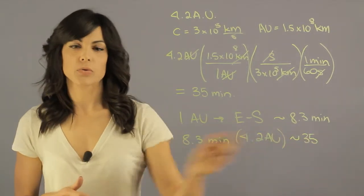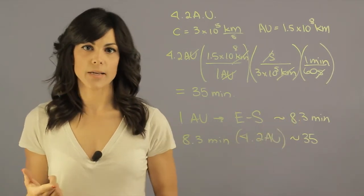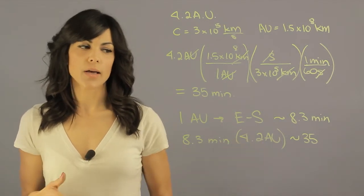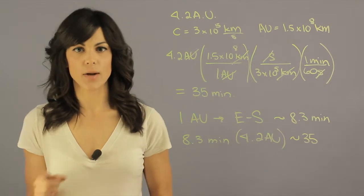So this is a handy little shortcut that you just have to remember. One astronomical unit means 8.3 minutes for light to travel. So if you know that something is 4.2 astronomical units away, you just multiply by 8.3 and it gives you the amount of minutes that light takes to travel that distance.